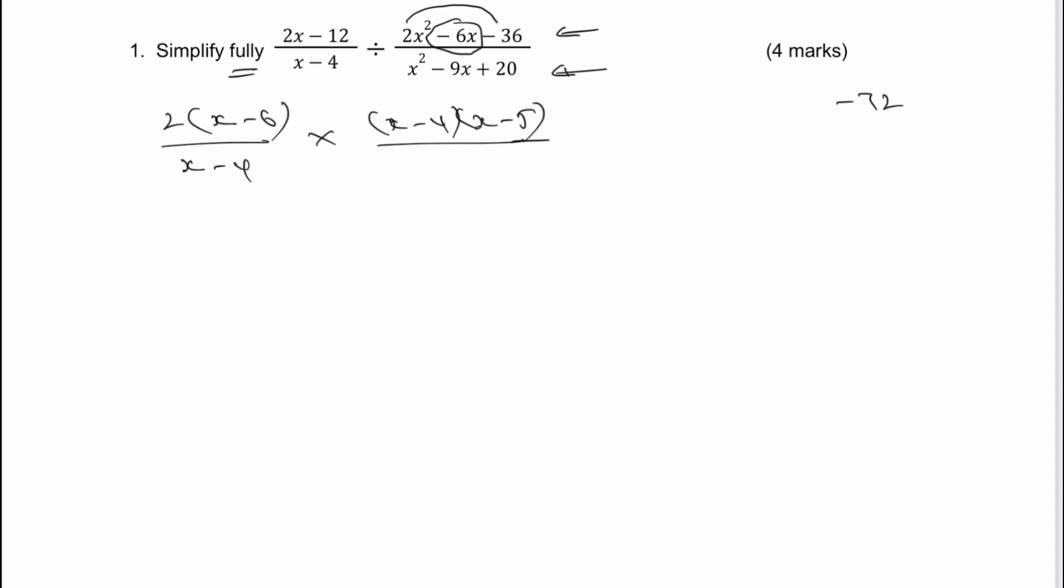Well those two numbers are going to be negative 12 and positive 6. So I then rewrite my expression as, rather than writing minus 6x, I'm going to write this as plus 6x minus 12x and then negative 36 at the end.